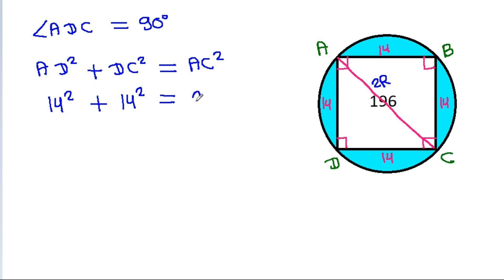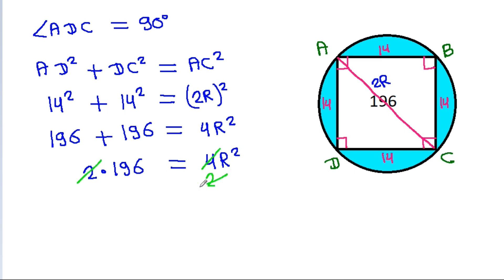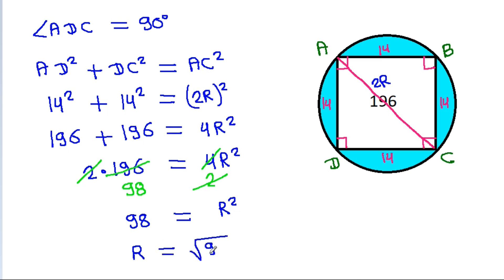AC is 2R, so AC squared is 4R squared. And it is 196 plus 196 equal to 4R squared, that is 2 times 196 equals 4R squared. And 2 times 98 is 196, so 98 is equal to R squared. Therefore R will be equal to the square root of 98, that is 7 times the square root of 2.